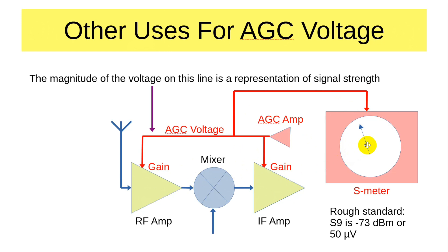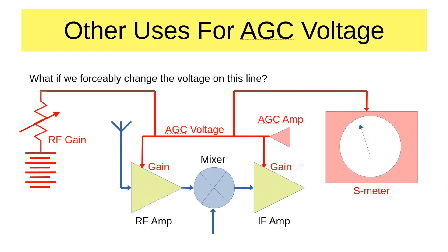If you hear a strong signal, you'll probably notice the background noise goes down too, while the signal seems relatively constant. Here's another use: suppose we forcibly change the voltage on this AGC line. We have an adjustable control — when you turn it up, you're simulating a higher magnitude AGC voltage, which lowers the gain. What do we call this control? RF gain. On a receiver with AGC, what you're controlling with RF gain is not some gain on the RF amp input directly, but rather the AGC system — it increases the magnitude of this voltage.